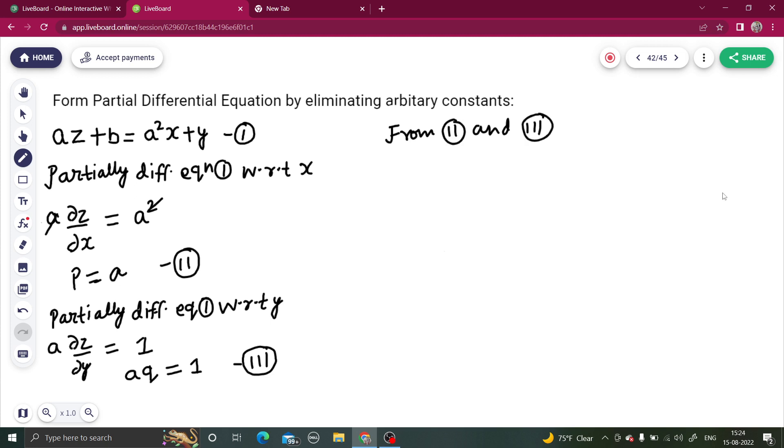So in equation number 3 you have aq equals to 1. Now value of a is also equal to p. So pq equals to 1 is what we are getting as our required PDE.